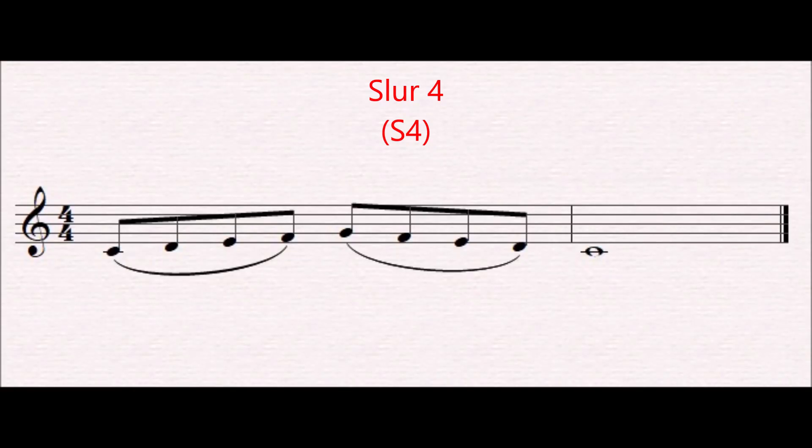Now within each group of four, we're going to try all the different ways we can play slurring and tonguing. The first way we just played it — that's what I call 'tongue four': we're tonguing all four notes in the group. We could also do 'slur four' — slur the first four notes and slur the last four notes. I'm tonguing the first note of each grouping and the very last note since it's not part of our groupings.